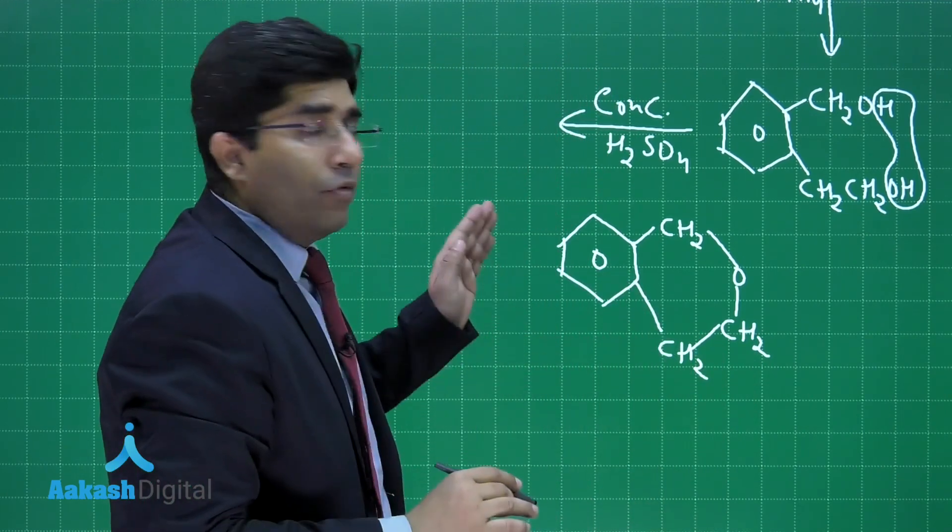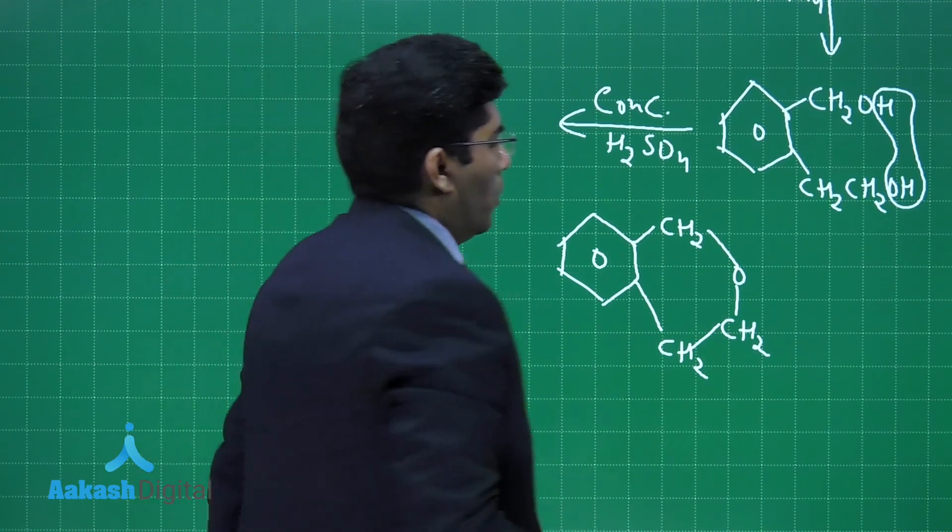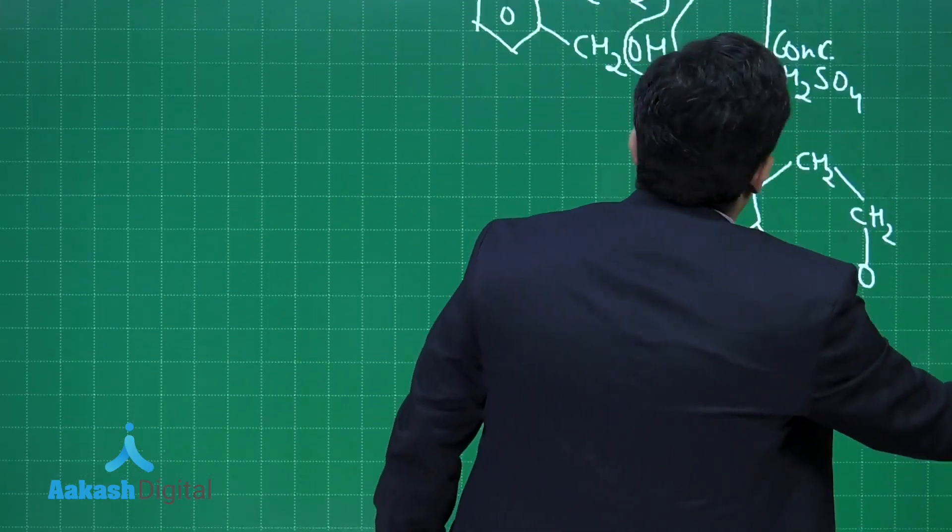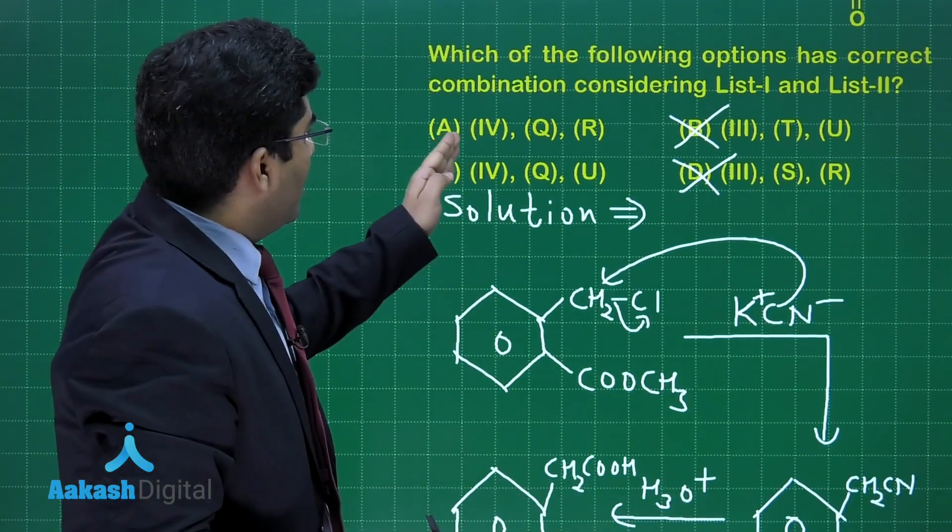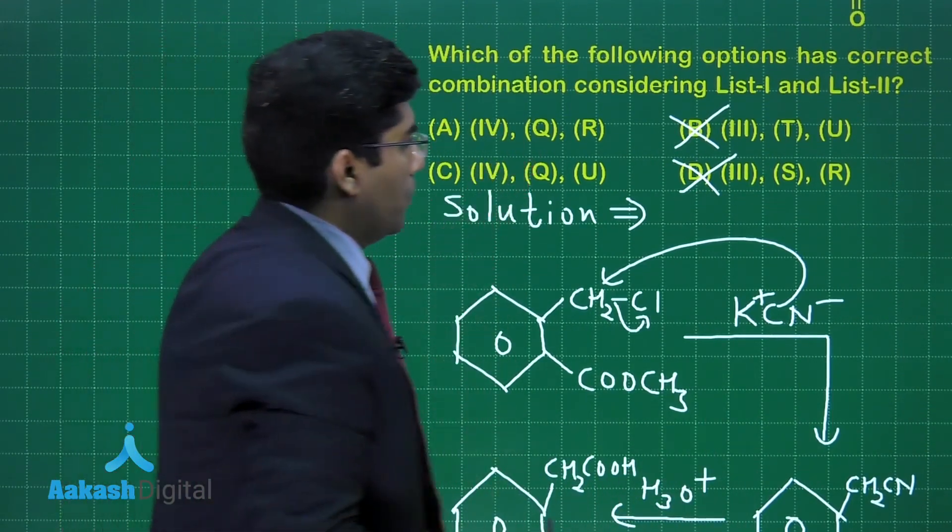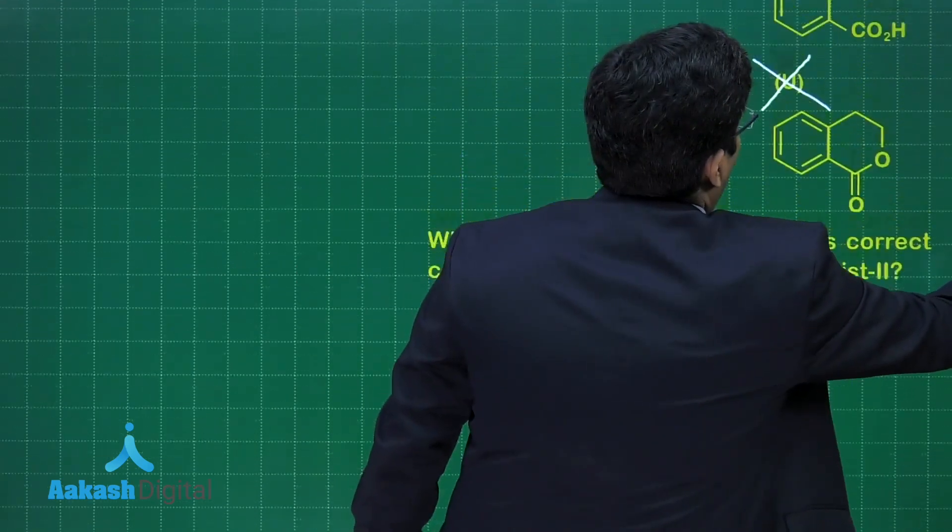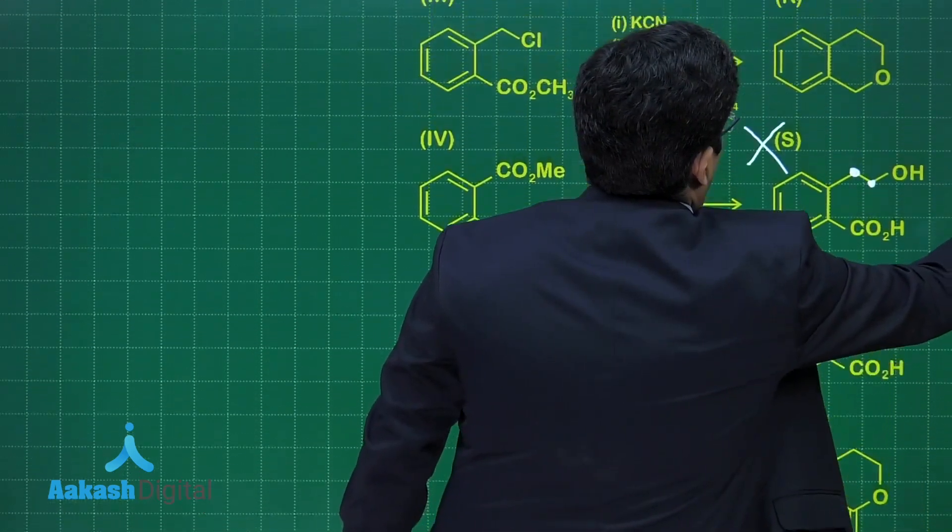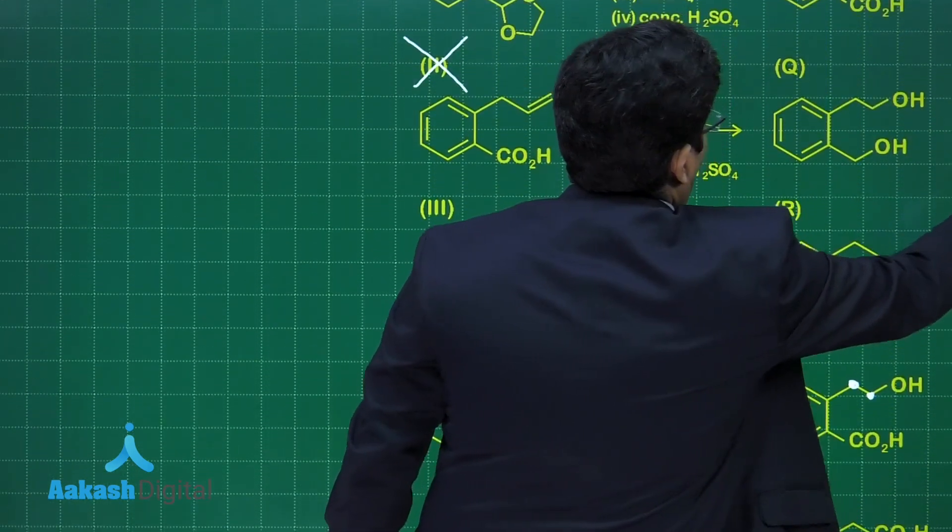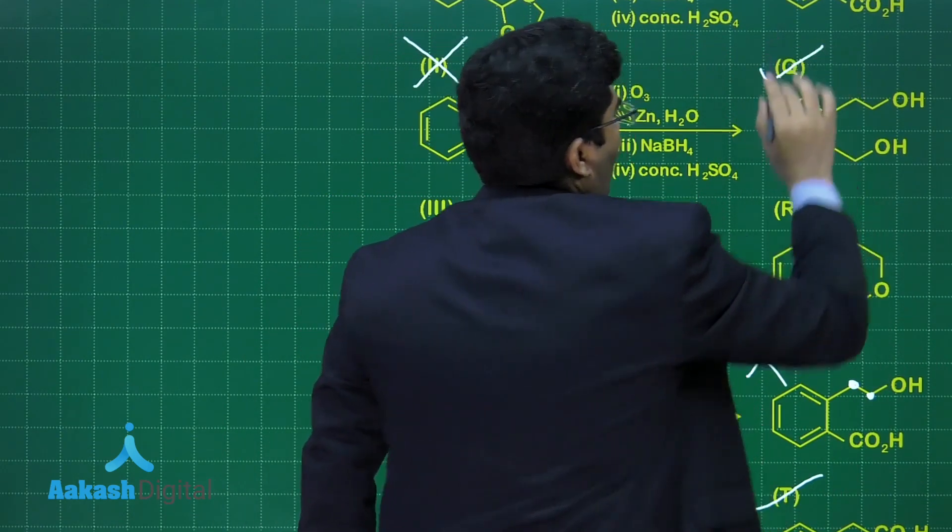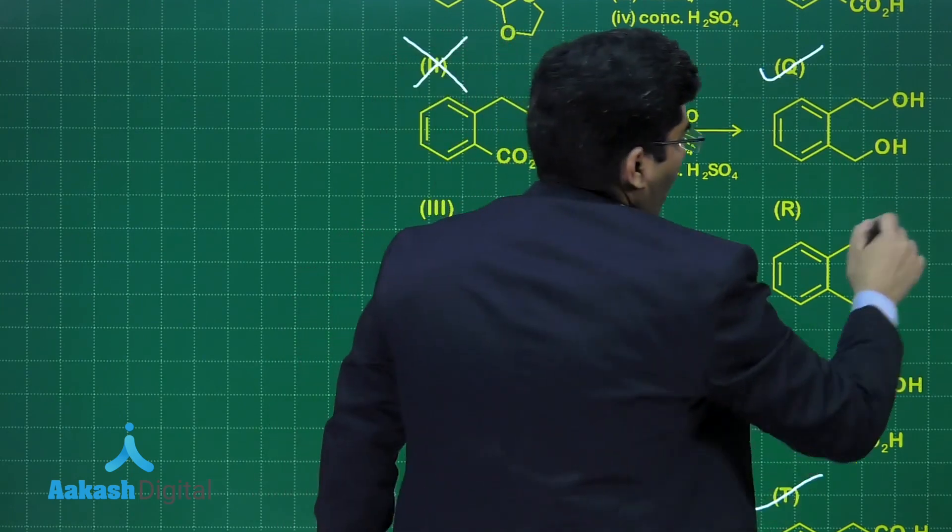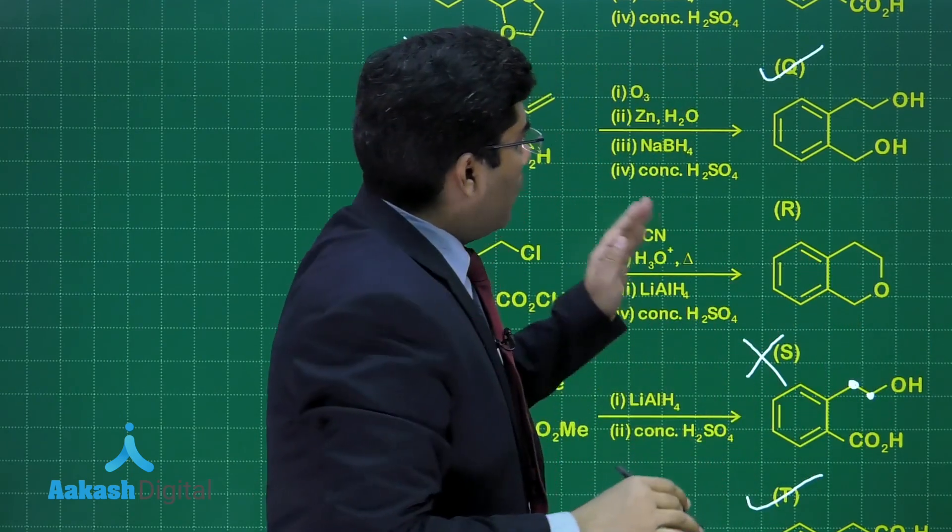Let us see what he is asking. According to option A, in fourth reaction Q and R should form. What is Q? This is Q. This is forming in our reaction and R, this was our final product.